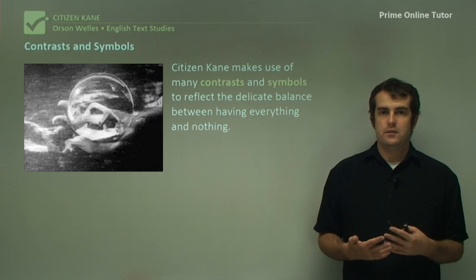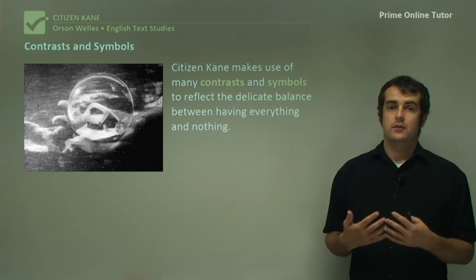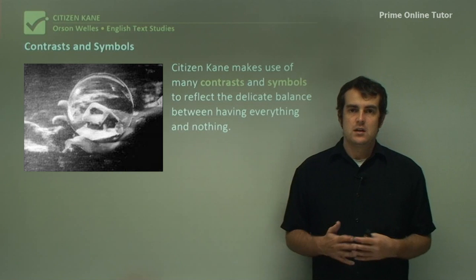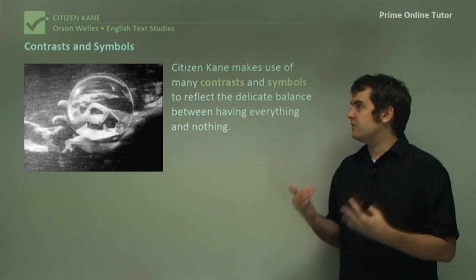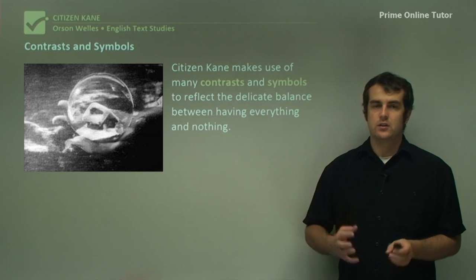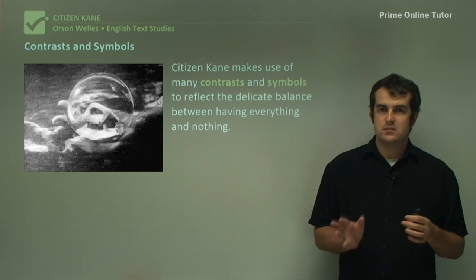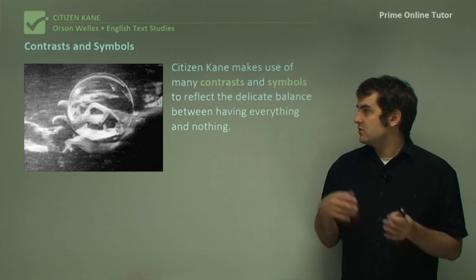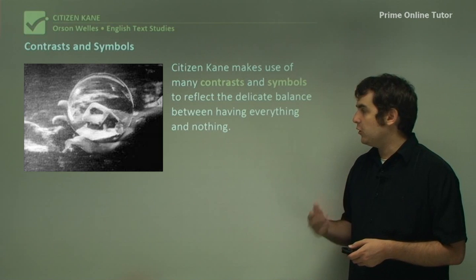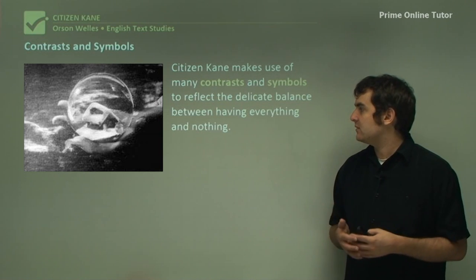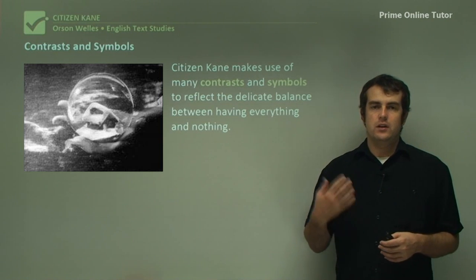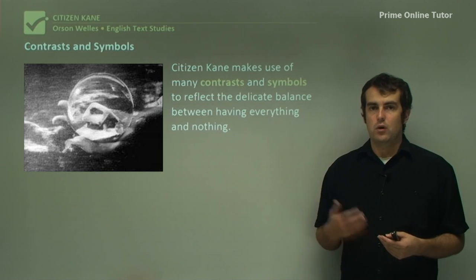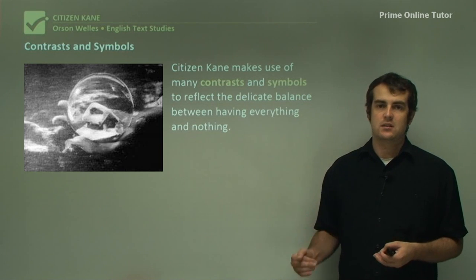Symbols and contrasts are used quite frequently in the film. Having everything and yet nothing is a prominent idea, and a strong indicator for why these symbols and contrasts are so important. Certainly the contrast between the young and old Kane, between his public and private persona, and the various symbols such as the snow globe and sled reinforce a lot of the key ideas. When discussing the role of contrasts and symbols, you'll be discussing it in that regard.